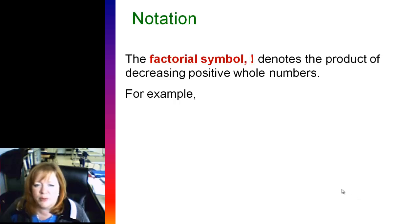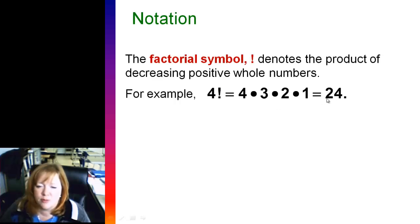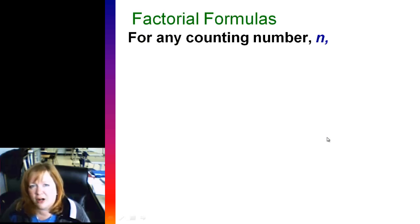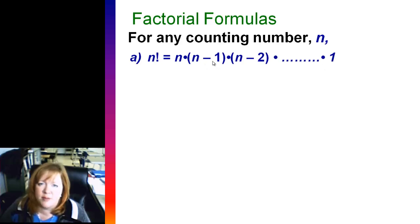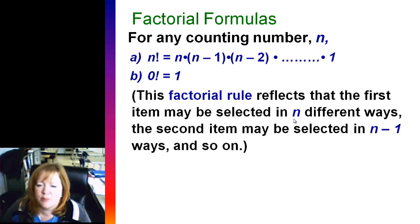This is the factorial symbol. It denotes the product of decreasing positive whole numbers. For example, you might have thought four with an exclamation point was four, but no. It's not just making an exclamation. It's symbolizing that four factorial is four times three times two times one. You're multiplying each of those numbers going down to one, getting 24 there. So it's called four factorial. And that comes up a lot in our probability solving, trying to find the number of outcomes. So for any counting number n, n factorial is n times n minus one times n minus two and so on. You're going down by one each time. Just so you know it, zero factorial is one. This rule reflects that the first item may be selected in n different ways, the second n minus one and so on.